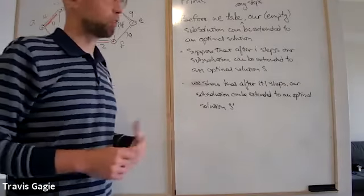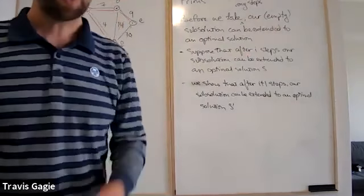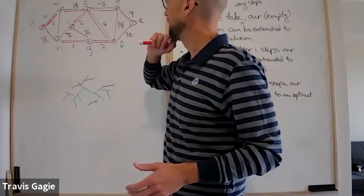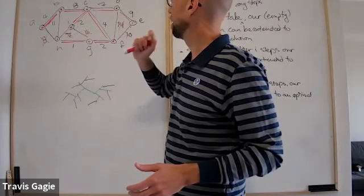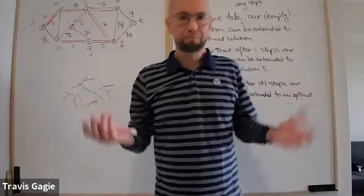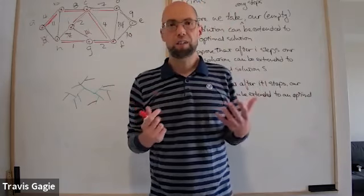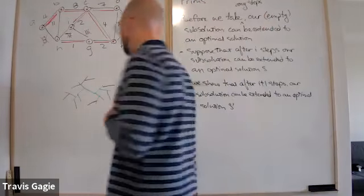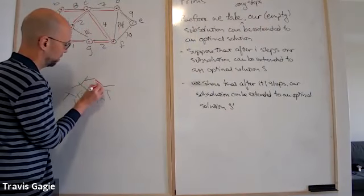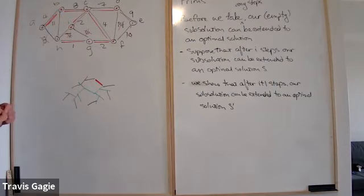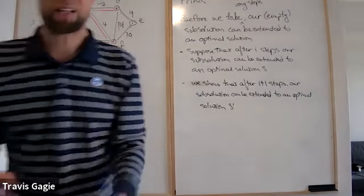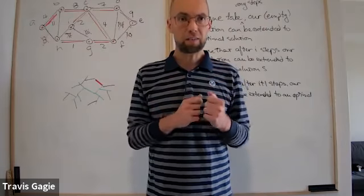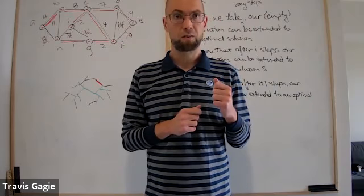Suppose we take the edge and S doesn't. Now, can we say the black edges on the cycle are at least as costly as the red edge? No — because we're only considering edges incident to the tree. It's possible the red edge has cost 5 and some other edge in the cycle has cost 3, because as we add edges to the tree we gain access to cheaper edges we weren't considering before.